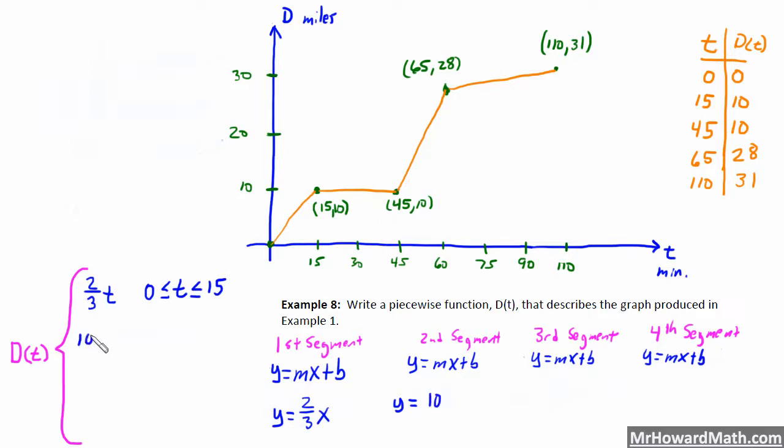So we can write this second part right here, y equals 10. And that is good for a domain where t is less than or equal to 45, that's the rightmost point here, and greater than or equal to the leftmost point, the t coordinate here is 15. So it's d of t equals 10 when t is less than or equal to 45 and greater than or equal to 15.